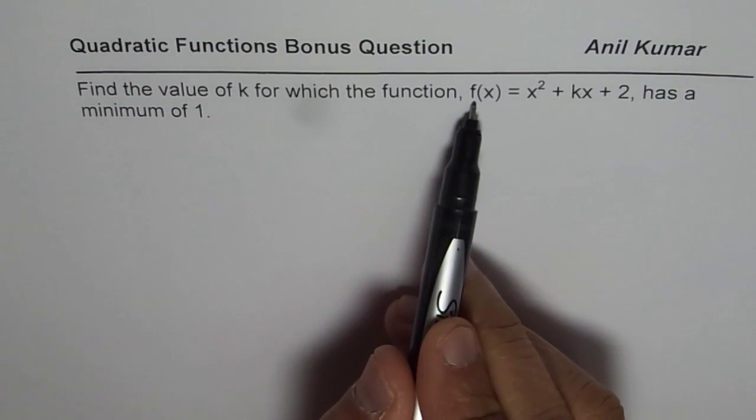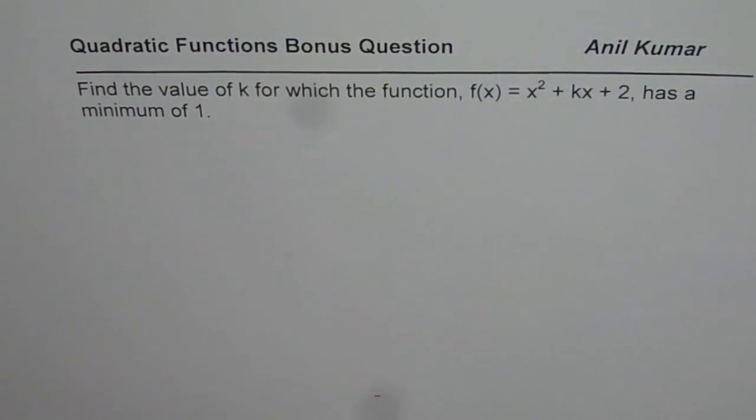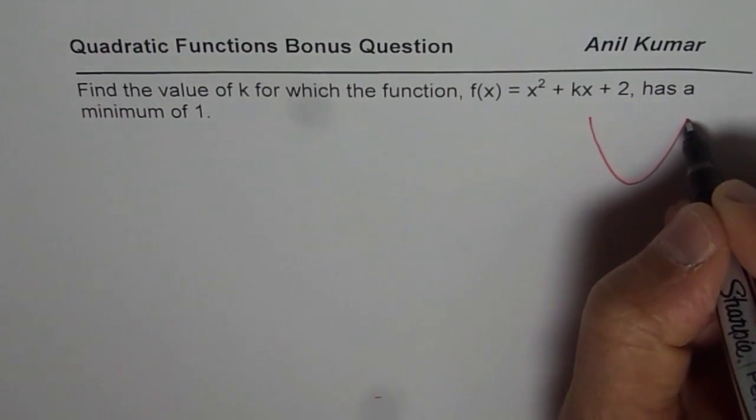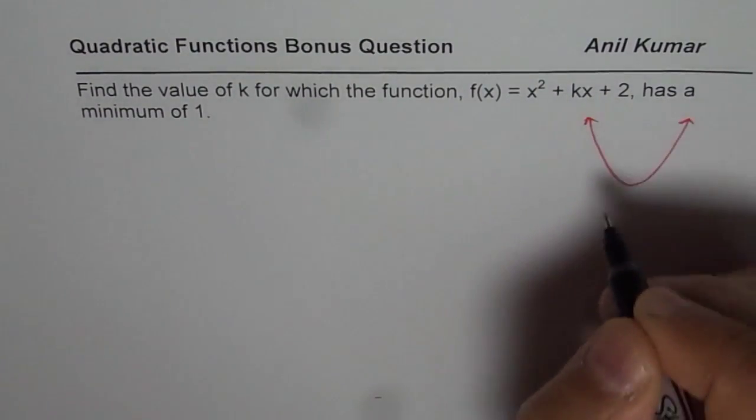That means the value is minimum 1 for the given function and we need to find that value of k. So how to do this type of equation? We know that x squared plus kx plus 2 is a parabola, so it is going to open upwards like this. So that is how the function is.